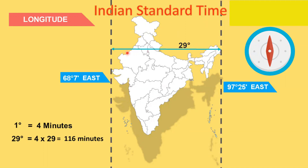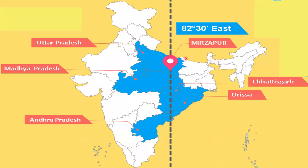We, the people of India, follow the same time all over India. In order to avoid the confusion of following two different times in a single country, we took the 82.5 degree east longitude as the central meridian of India, which passes through Mirzapur in Allahabad, in U.P., Uttar Pradesh. This central meridian passes through the states of Uttar Pradesh, Madhya Pradesh, Chhattisgarh, Odisha, and Andhra Pradesh.